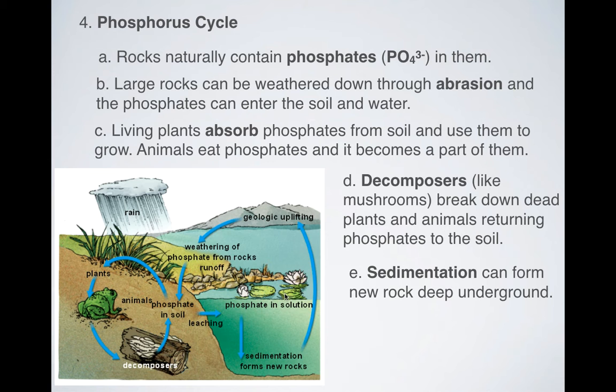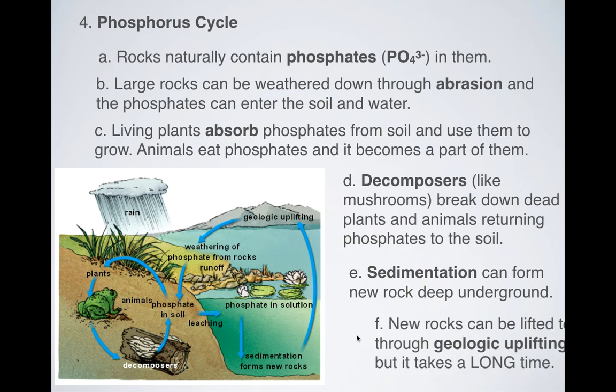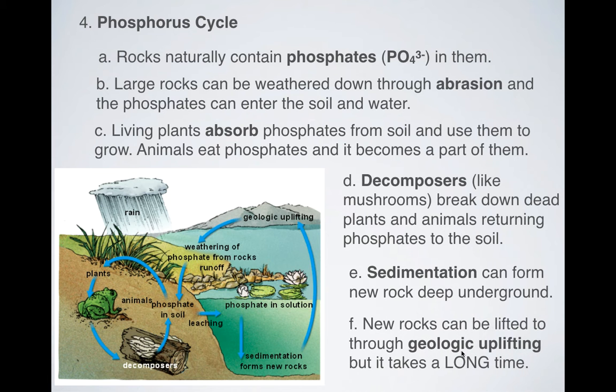Sedimentation can form new rocks. So phosphates can settle and then they can form new sediments, which would then make new rocks eventually. And then new rocks can be lifted up through geological uplifting, which would be like the process of making mountains. That takes a long, long time, but the phosphates then can be weathered down again and the process repeats.